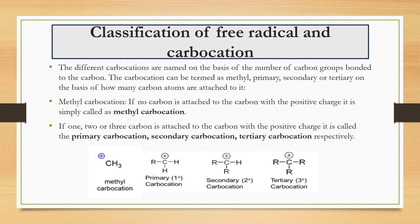Now let's look at the classification of free radicals and carbocations. Both are classified based on the number of carbon groups bonded to the carbon. Carbocations can be termed methyl, primary, secondary, or tertiary based on how many carbon atoms are attached. If no carbon is attached to the positively charged carbon, it is called a methyl carbocation. If one, two, or three carbons are attached, it is called primary, secondary, or tertiary carbocation, respectively.